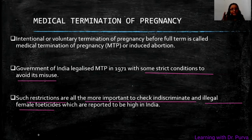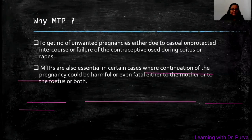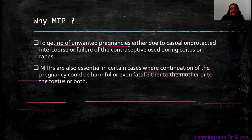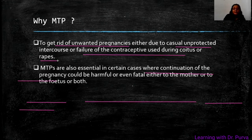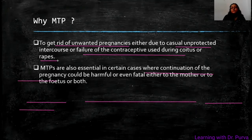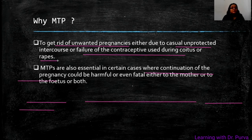MTP has been given a particular time and duration within which it can only be done. Females choose MTP to get rid of unwanted pregnancies, and that unwanted pregnancy is either due to casual unprotected sex or the failure of a contraceptive used during coitus. So to avoid unwanted pregnancies where a contraceptive method failed or was not used and the female is pregnant, they can do MTP. The second case is rape — if after unwanted sex the female is pregnant, they can do MTP.